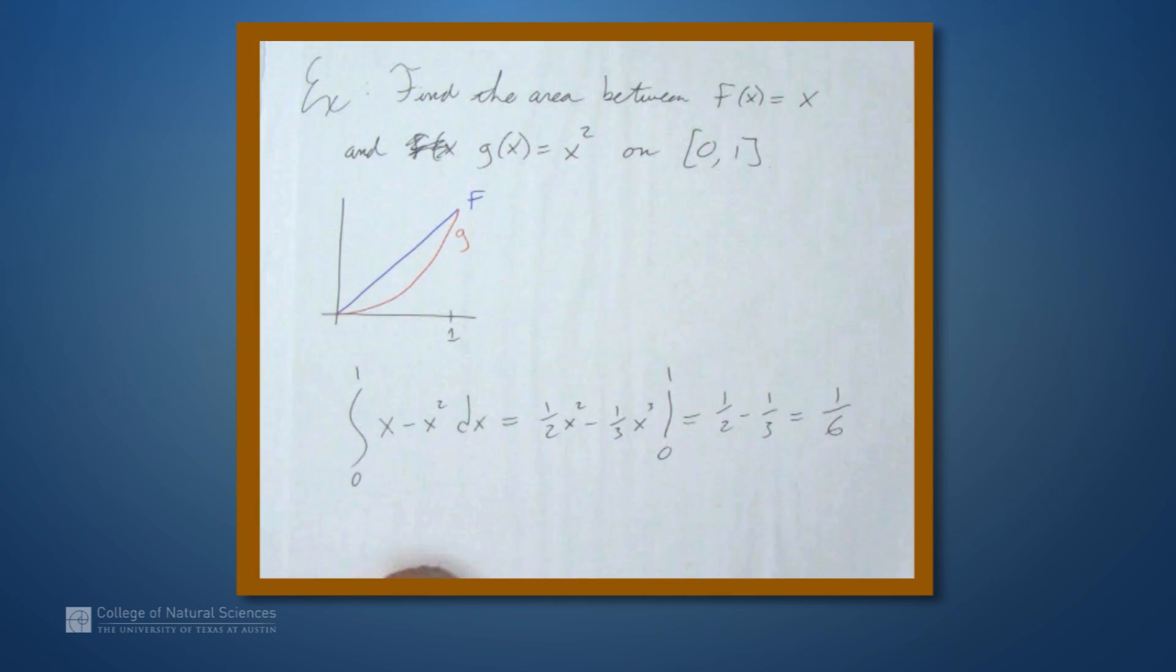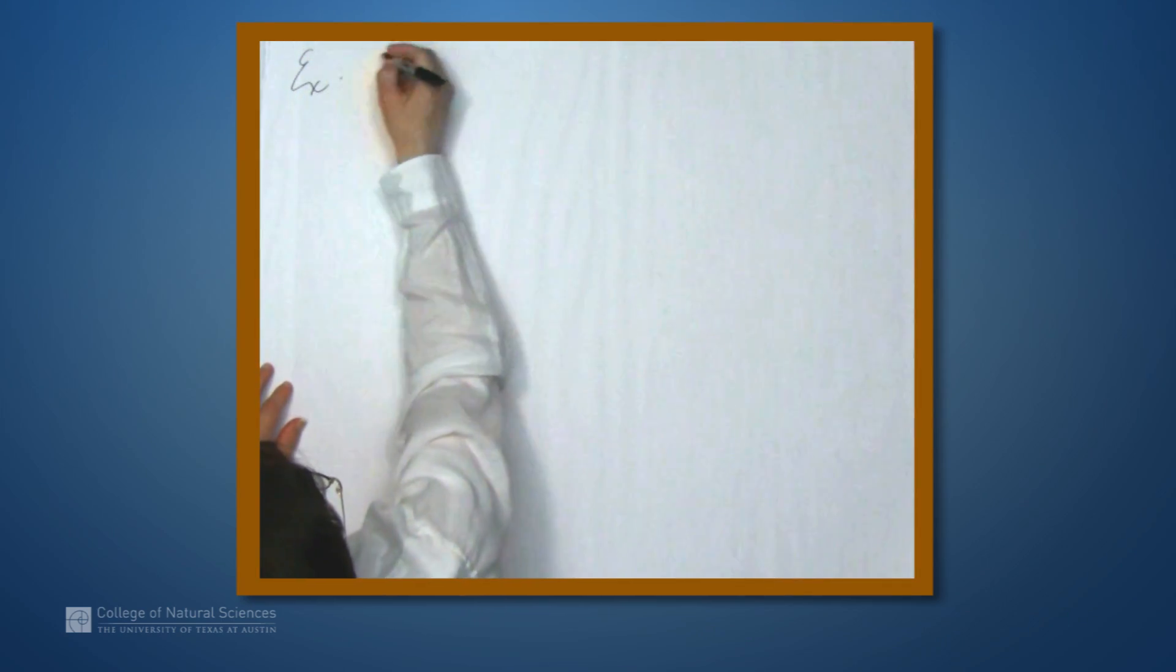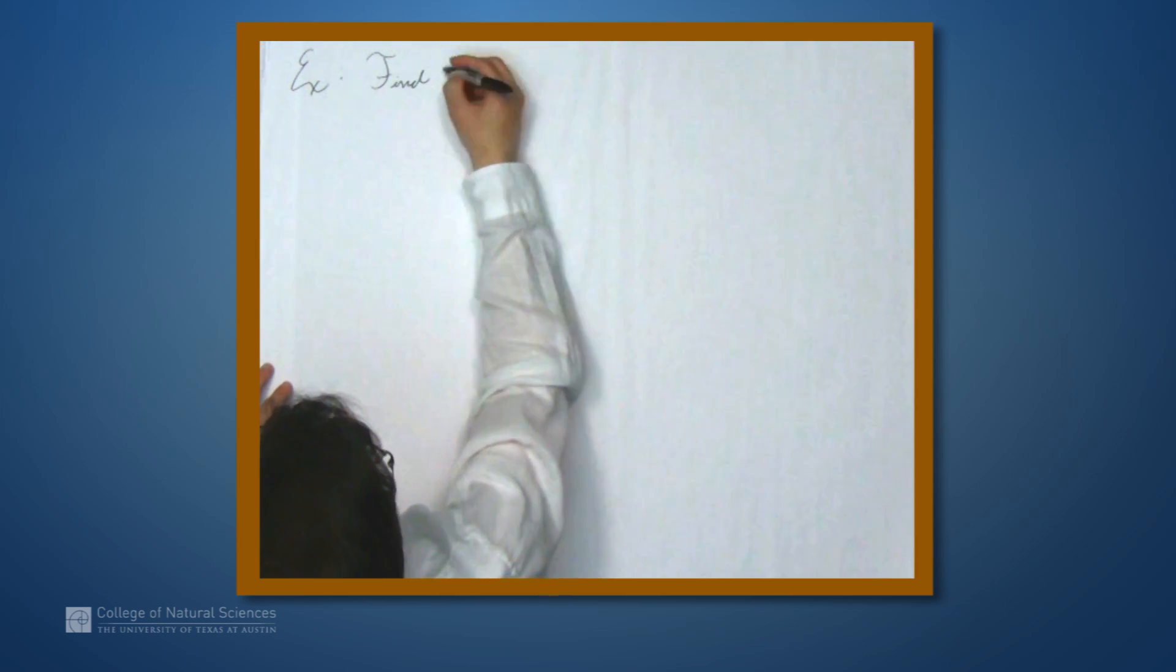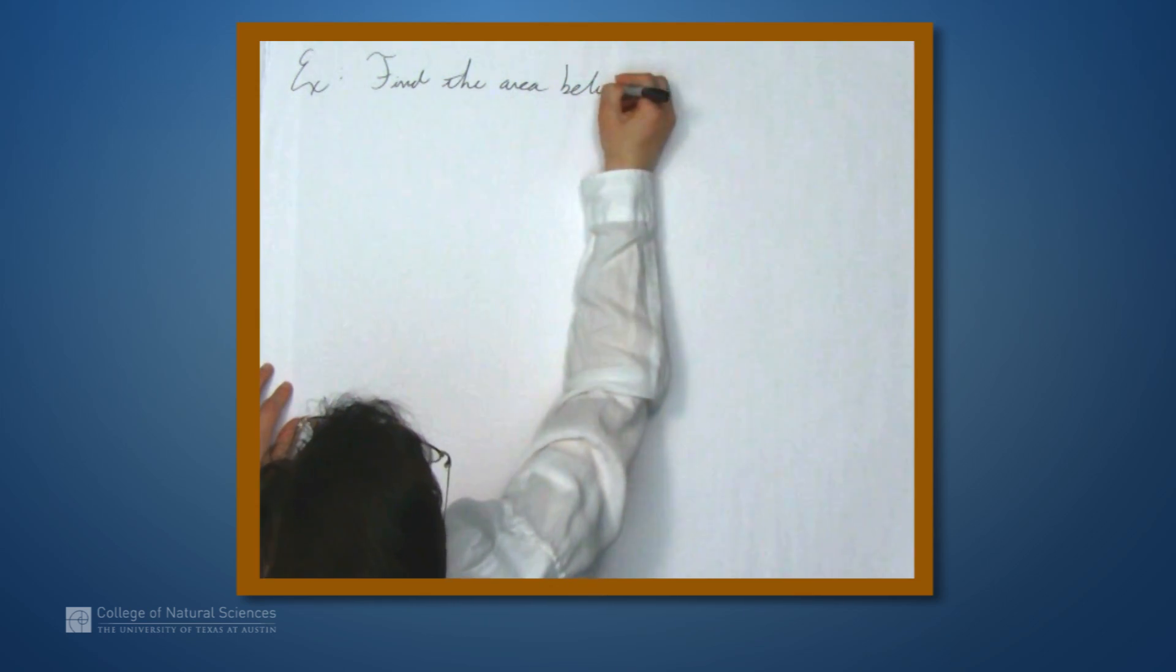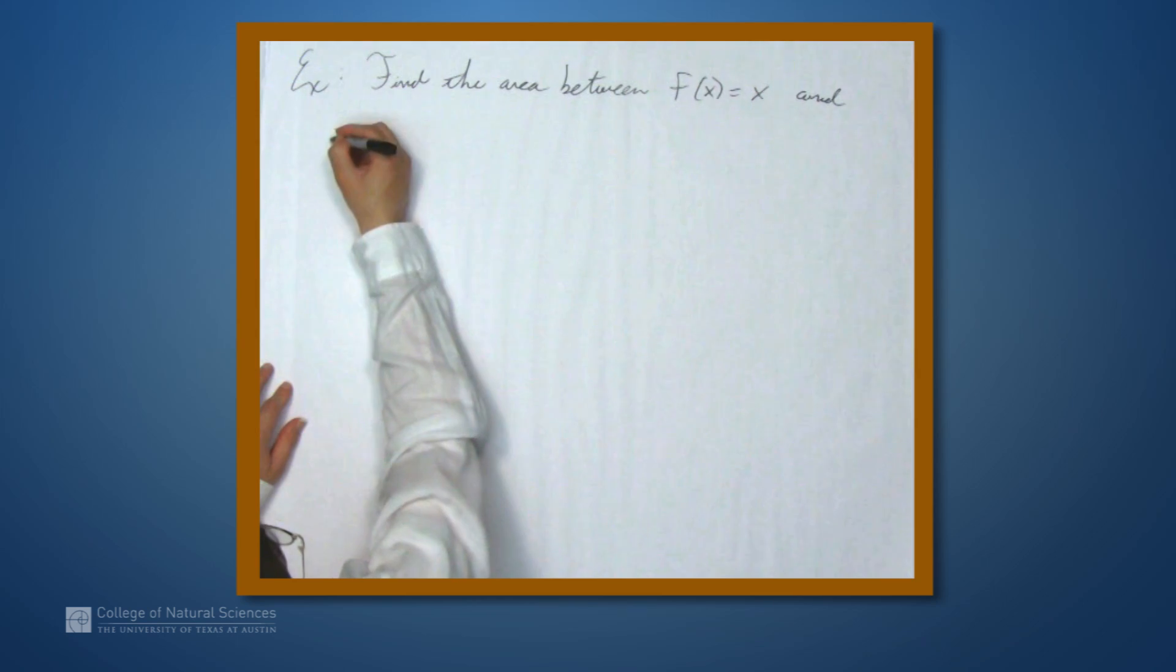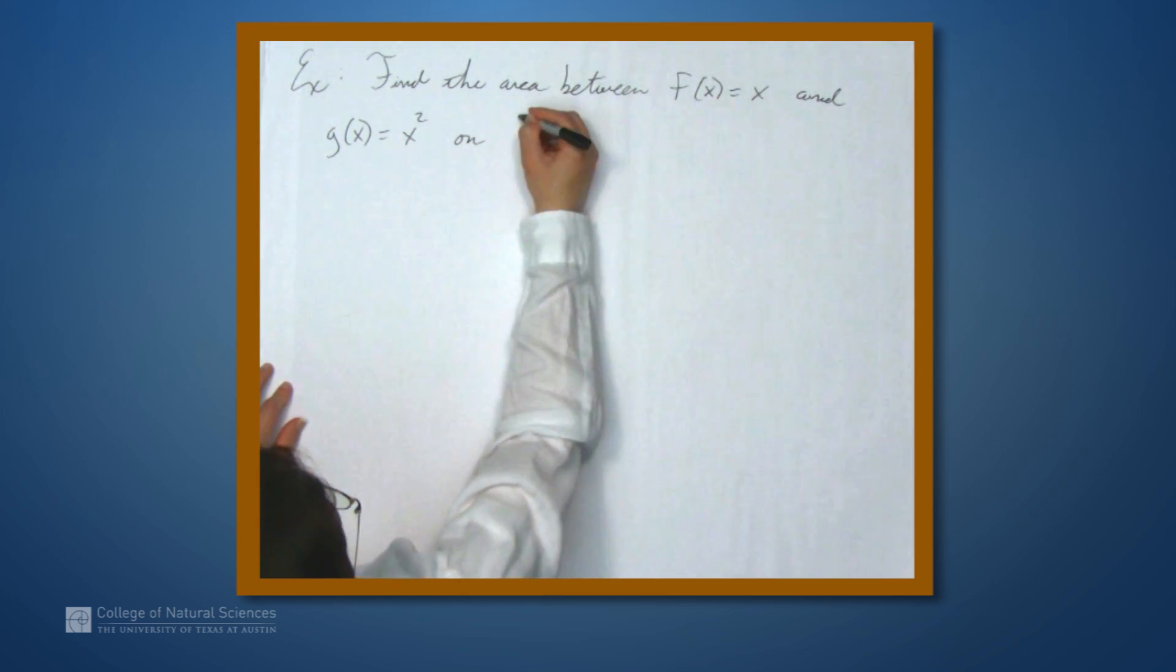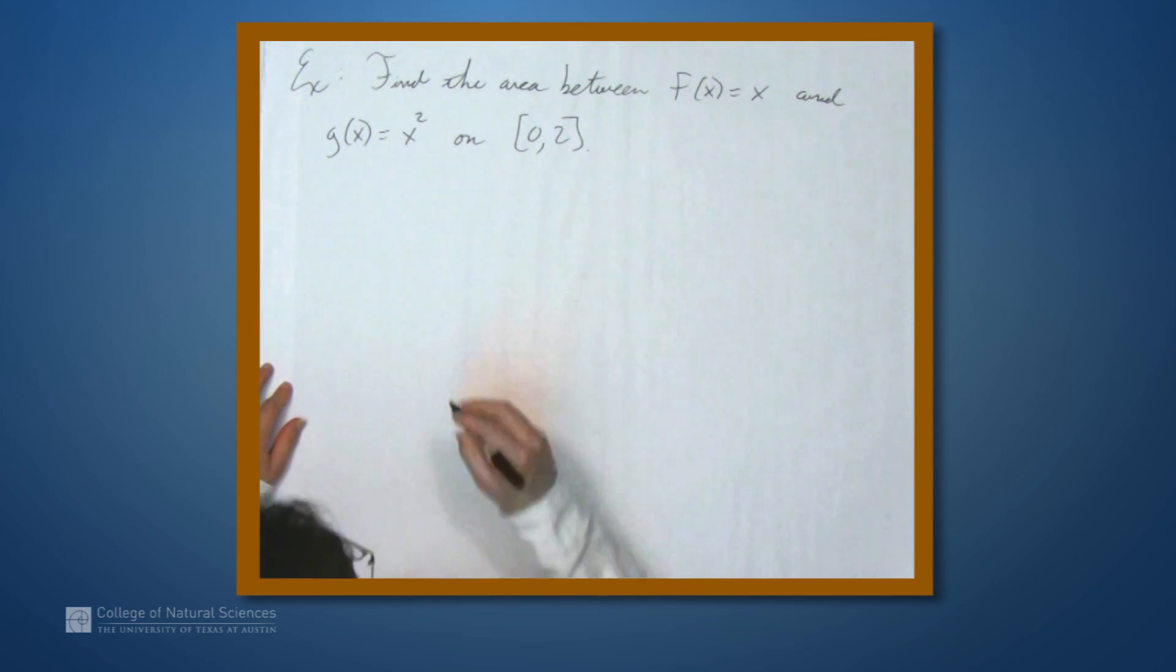Now let's look at a slightly more complicated example. So here we'll find the area, in fact, between the same two curves. So find the area between f of x equals x and g of x equals x squared. But now we'll do this on the interval from 0 to 2.